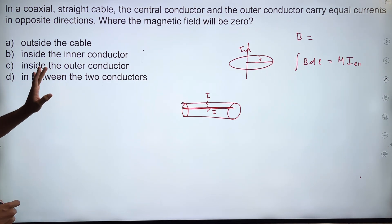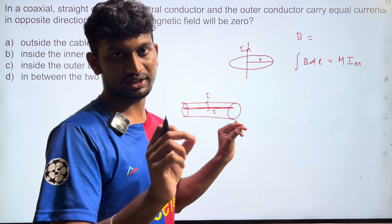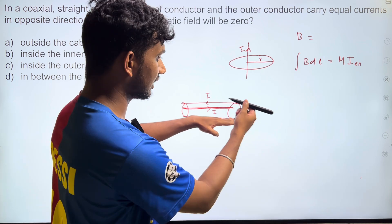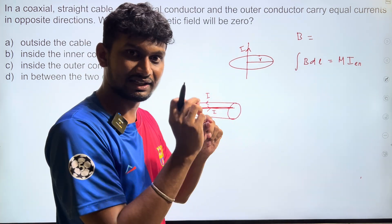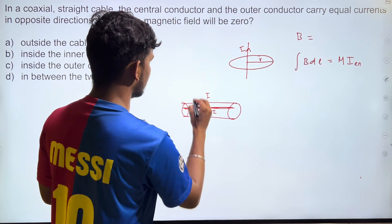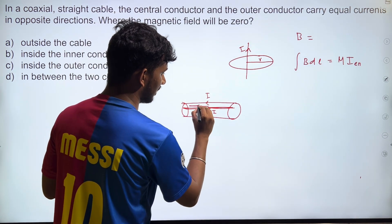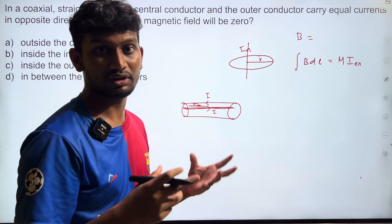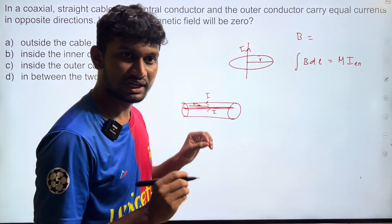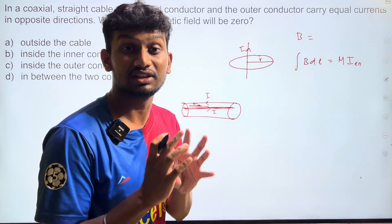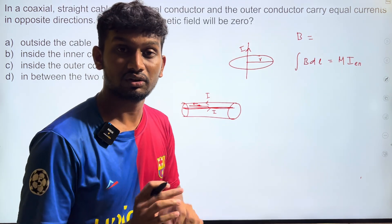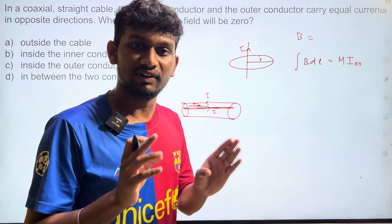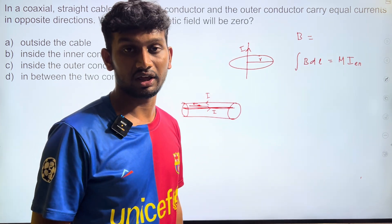Inside the outer conductor, we have current in one direction from the inner conductor, but inside the outer conductor we have current in the opposite direction. If you consider a point inside the outer conductor, the current enclosed includes the full inner conductor current plus a partial outer conductor current. These are not completely equal, so net i_enclosed is not zero — meaning there will be some magnetic field inside the outer conductor.